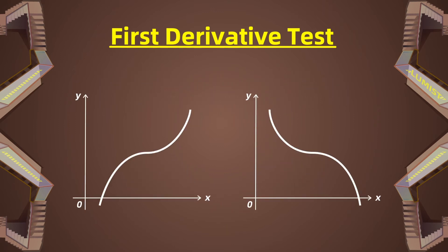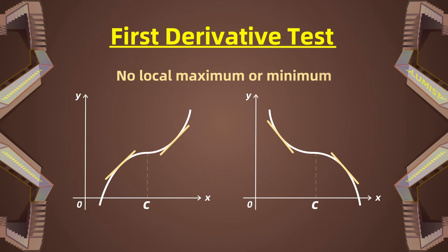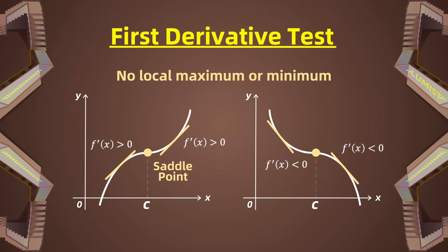If f' does not change signs — for example, if f' is positive on both sides of c, or negative on both sides — then there is no local maximum or minimum at c, and we say that c is a saddle point. In the first example, f'(x) is greater than 0 on both sides of c, meaning c is a saddle point. And in the second example, f'(x) is less than 0 on both left and right sides of c, meaning c is also a saddle point.